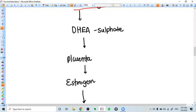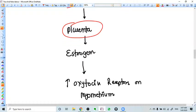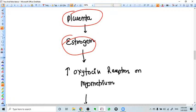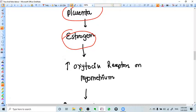The adrenal glands will start secreting DHEA sulfate. And these androgens will go to the placenta again, where it is converted to estrogen.